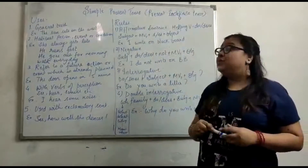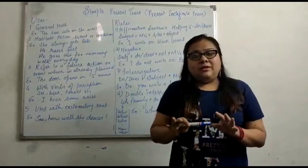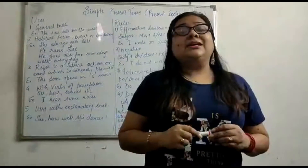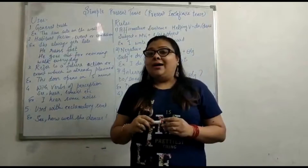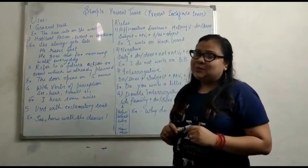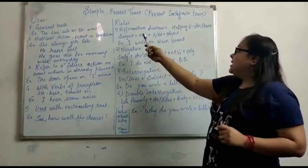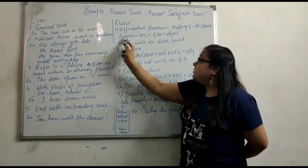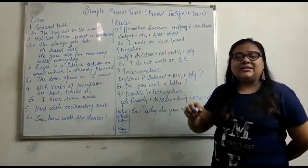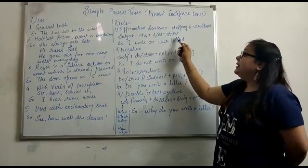Now coming on to the rules. First, affirmative sentences — which are positive by nature. The helping verbs used in simple present tense are 'do' and 'does.' Do is used with plural subjects and does is used with singular subjects. I and you are always exceptions — even though they are singular, you still use 'do' with them. The rule is: subject plus main verb first form plus 's' or 'es' depending on the type of subject, and then the object.